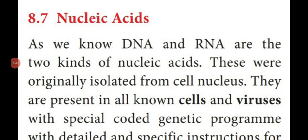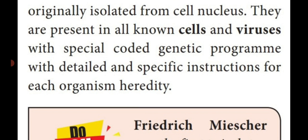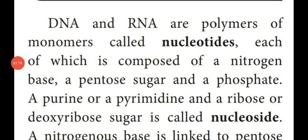There are two types of nucleic acid: one is DNA, another one is RNA. DNA is deoxyribonucleic acid, RNA is ribonucleic acid. Both are present in the nucleus and in cells and viruses, containing the genetic material and determining the hereditary character of an organism. DNA and RNA are made up of polymers produced from monomers called nucleotides.